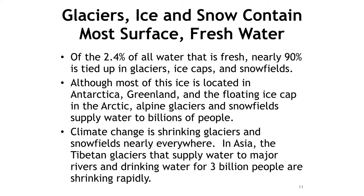Drought conditions already have reduced snowfall and runoff in the western United States, and global warming is projected to cause even further declines. Climate change is shrinking glaciers and snow fields nearly everywhere. In Asia, the Tibetan glaciers that are the sources of six of the world's largest rivers and supply drinking water for 3 billion people are shrinking rapidly. There are warnings that these glaciers could vanish in a few decades, which would bring enormous suffering and economic losses to the continent.